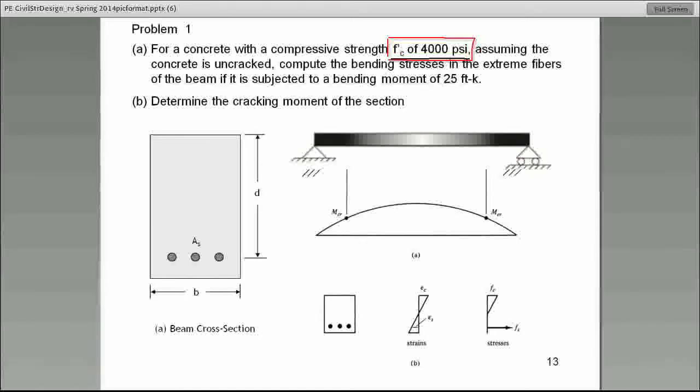Then it says, assuming the concrete is uncracked. Please underline this and make a mental note. I will tell you what that means. If you see it on the test, exactly how do you deal with it. They say concrete is uncracked. And then they say, would you please compute the bending stresses in the extreme fibers? That means either top or bottom. If the beam is subjected to a moment of 25 foot-kips, make a note of the units. 25 foot-kips.